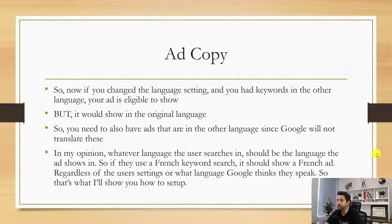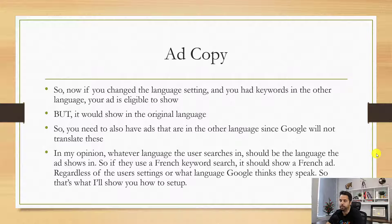Same with ad copy. If you've changed the language setting and you have keywords in the other language, your ad is eligible to show, but it would show in the original language. So you need to have ads that are also in the other language since Google doesn't translate these. In my opinion, whatever language the user searches in should be the language the ad shows in. So if they use a French keyword, it should show a French ad. That's my opinion, and that's how I'm going to show you how to set things up.